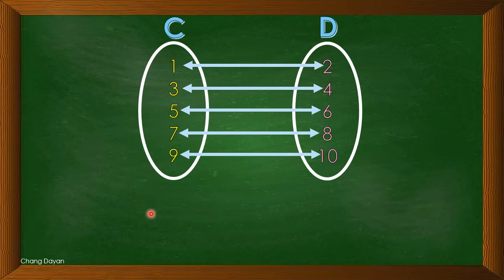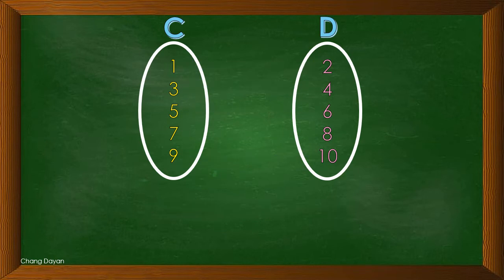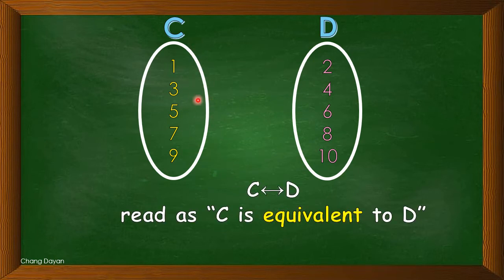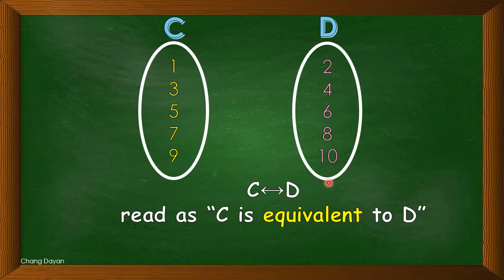We consider these two sets as equivalent sets because they have the same number of elements — five elements for both sets — and the elements are not identical. For set C we have odd numbers, while in set D we have even numbers. So we can say that C is equivalent to D.